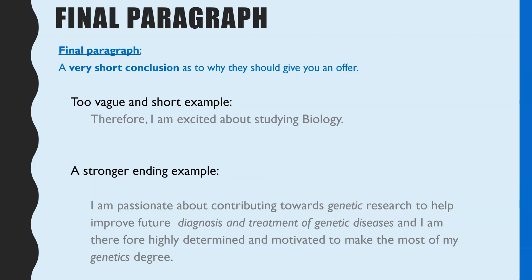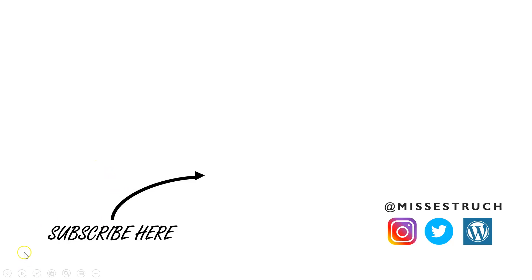Finally, the last paragraph is very short — a conclusion to round off with a summary of why they should offer you a position. Try not to be too vague; for example, just saying 'therefore I'm excited about studying biology' isn't particularly strong. A much stronger ending would be something like: 'I'm passionate about contributing towards genetic research to help improve future diagnosis and treatment of genetic diseases, and I'm therefore highly determined and motivated to make the most of my genetics degree.' That's just to demonstrate the difference between a strong and a weak final paragraph. I hope you've found this helpful to get you started writing your personal statement.